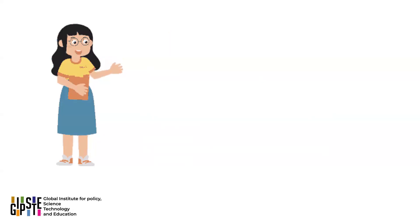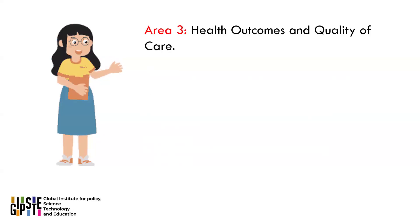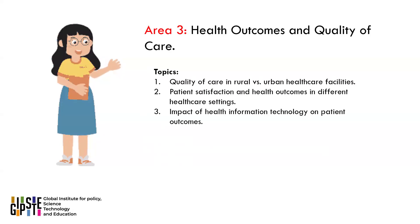Area 3: Health Outcomes and Quality of Care. Here are three topics for health outcomes and quality of care to be considered: 1. Quality of care in rural versus urban healthcare facilities. 2. Patient satisfaction and health outcomes in different healthcare settings. 3. Impact of health information technology on patient outcomes.